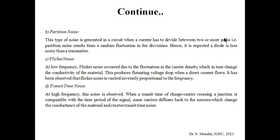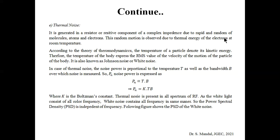Flicker noise occurs at low frequencies due to fluctuation in current density, which in turn changes the conductivity of the material, producing a fluctuating voltage drop. Flicker noise is inversely proportional to frequency. Transit time noise, on the other hand, is dominant at high frequencies. When the transit time of a charge carrier crossing a junction is comparable with the time period of the signal, some carriers diffuse back to the source, changing the conductance and creating transit time noise.